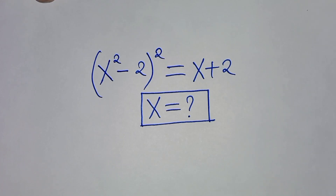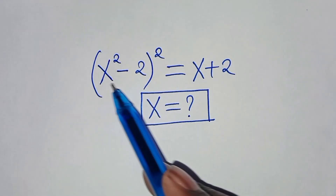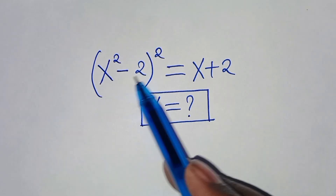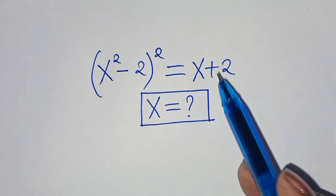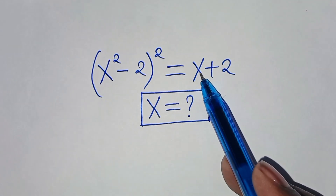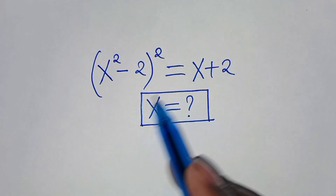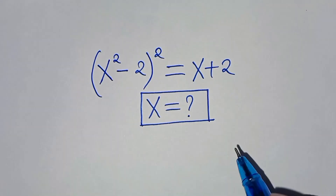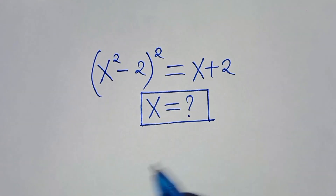Hello everyone, you're welcome to solve this nice algebra problem, which is x squared minus 2, raised to power 2, and this is equal to x plus 2. What are the values of x?